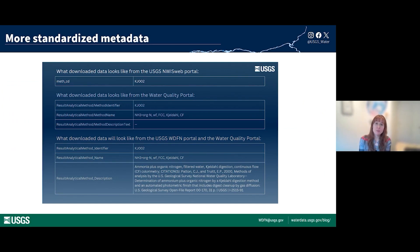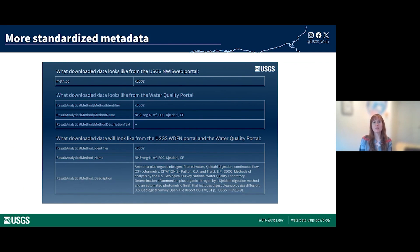Another example illustrating improved data delivery involves how we report analytical methods. In legacy NWIS Web, we report a method code along with a description in the top of the RDB file, also providing method information via the Water Quality Portal in a field called result analytical method name. This gives users some detail about the method, but not enough to know exactly how the measurement was made. Now we are providing a much more comprehensive method description that includes specific methodological details and the citation for the method when available, so users can track down the exact method directly from the data download.